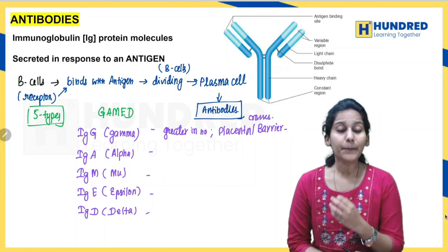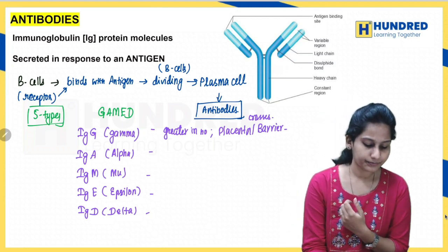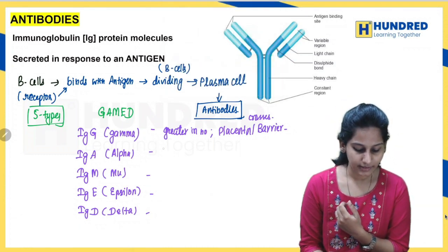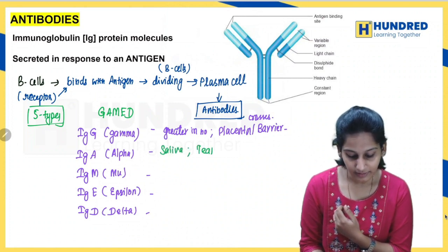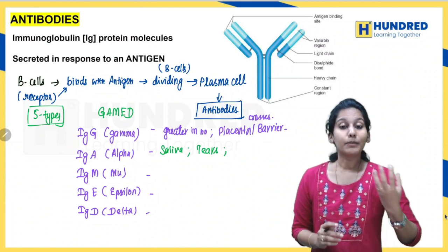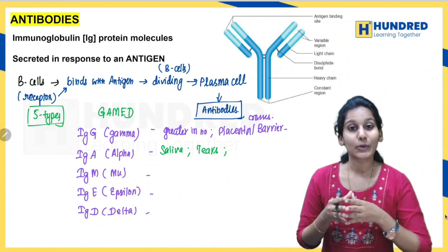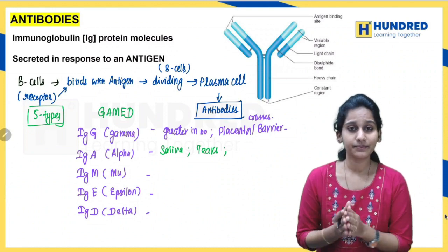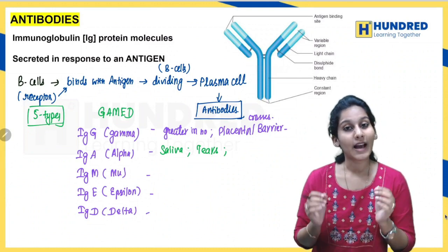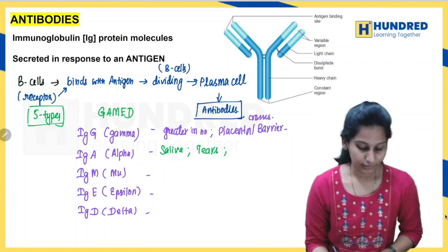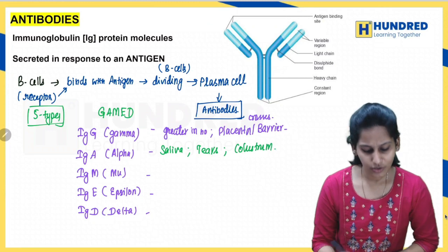Next, IgA — alpha. IgA is usually present in body secretions like saliva and tears. Also, in pregnant mothers, the first milk produced after delivery in the first few days is a thick milk called colostrum. Colostrum contains a high amount of IgA antibody.